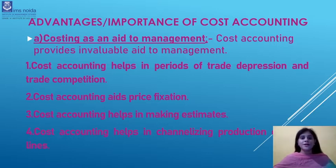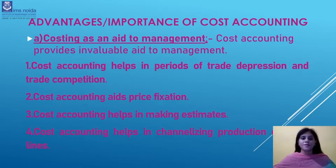Although the law of supply and demand determines the price of the product, the cost of production does play an important role. The producer can take necessary guidance from his costing records in case he is in a position to fix or change the price charged. Cost accounting helps in fixing prices — it provides detailed cost data of each product both on the aggregate and unit basis, which enables fixation of selling price.